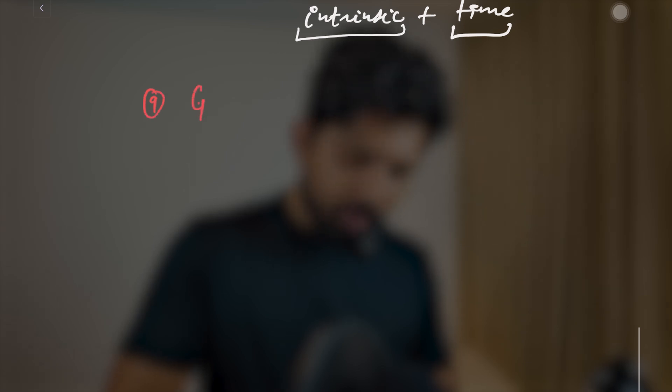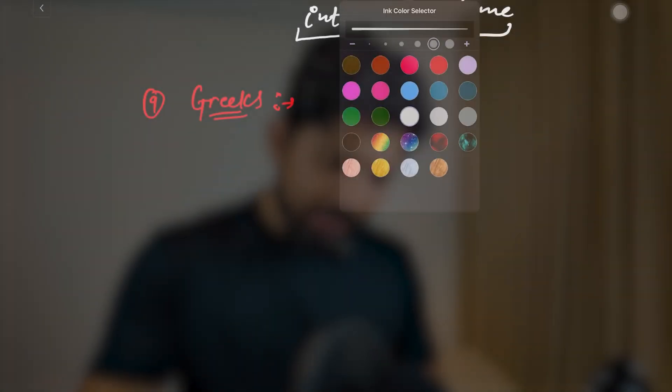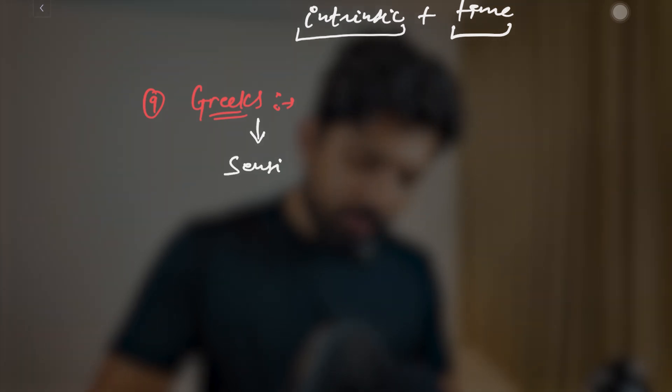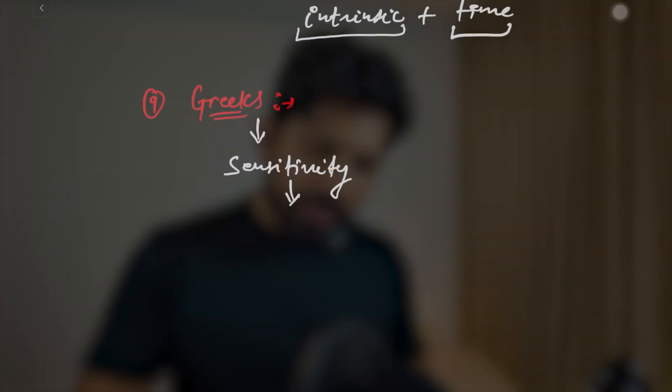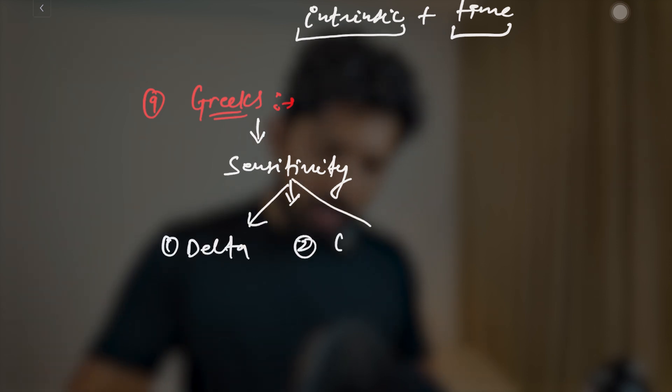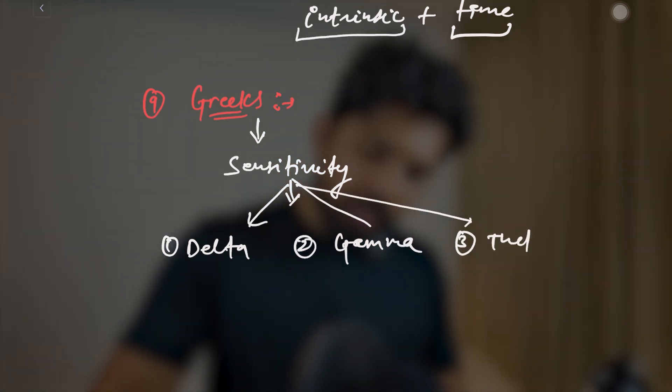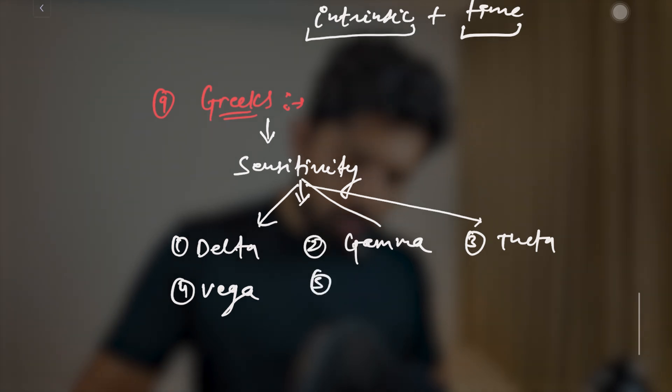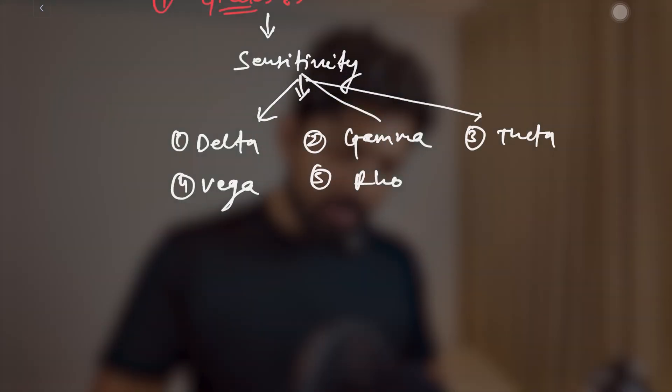Finally, we have the Greeks — this is where all the game happens. We'll understand each Greek thoroughly and after finishing that session you will be absolutely clear on all the concepts. Simply put, the Greeks describe the sensitivity of option market prices. Knowing the sensitivity makes it much easier to trade and make money. The Greeks include Delta, Gamma, Theta, Vega, and Rho — named after Greek letters, similar to how we count in English or Hindi. We'll understand them thoroughly in upcoming videos.